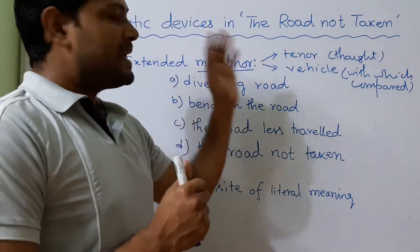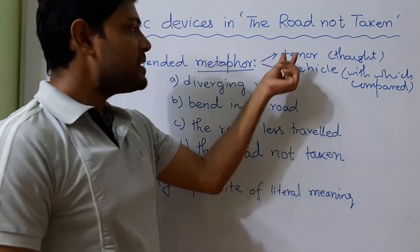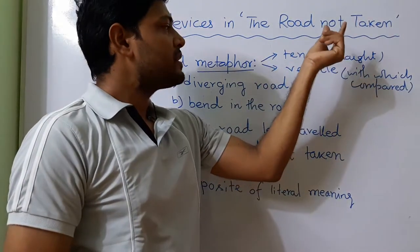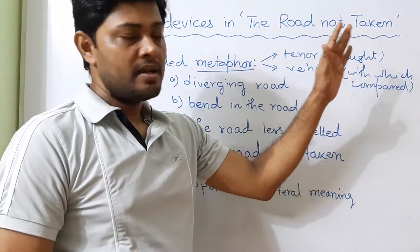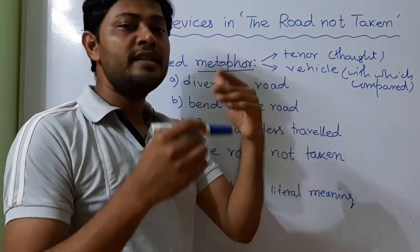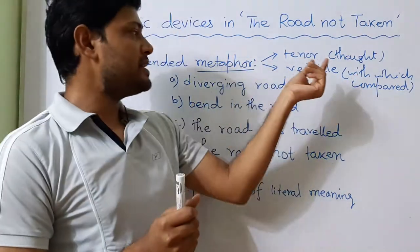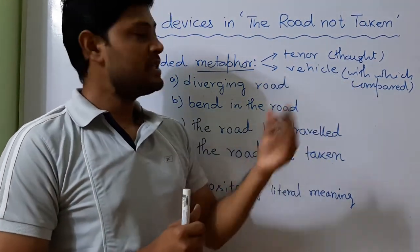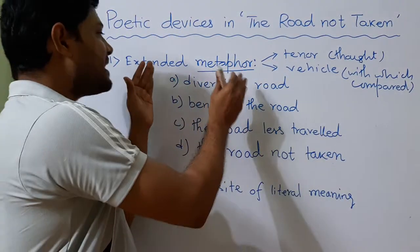In metaphor there are two parts: Tenor and Vehicle. Tenor means thought — here the thought means life. Vehicle means the thing with which it is compared — here the bed of roses. So life is the tenor, which is compared with the bed of roses, which is the vehicle.